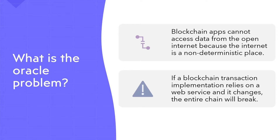To start off, what problem are we solving? As you're probably aware, blockchain applications must be deterministic. That is, all nodes in the network must be able to replay transactions and arrive at the same shared state. This means that blockchain apps cannot access data from the open internet because the internet is a non-deterministic place.